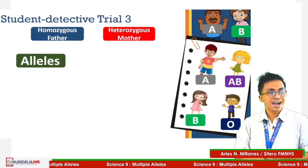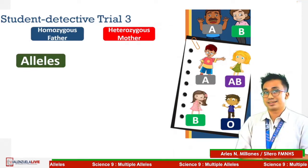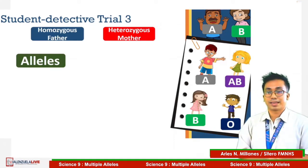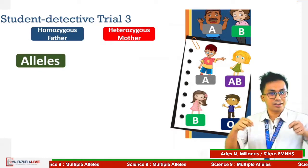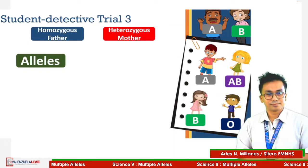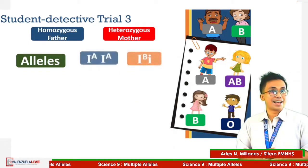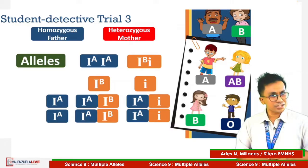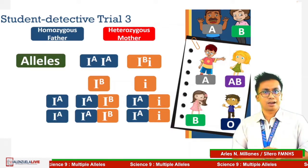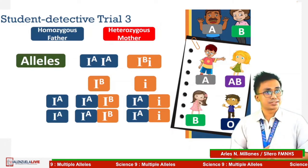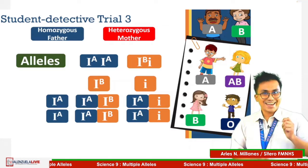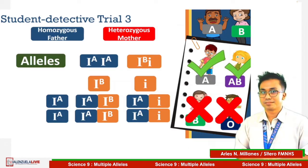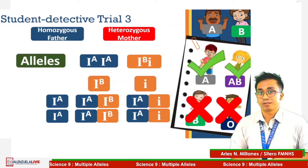For Trial 3: homozygous father and heterozygous mother. What are the alleles? Can you guess? Key in on the comment box. We have this one, and the end result will be this one. But the question is, who owns those blood types? They are from Arya and Rob. But still, we need to focus on our goal — to prove all four children are legitimate.